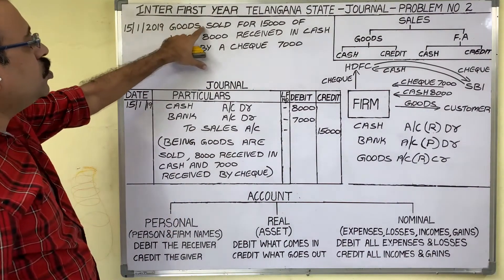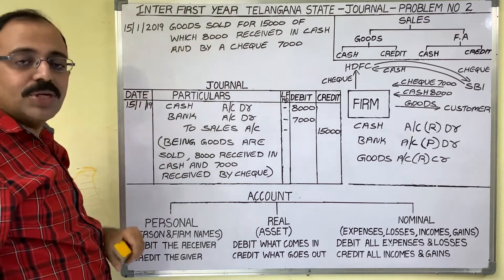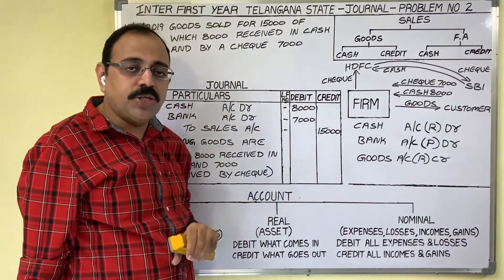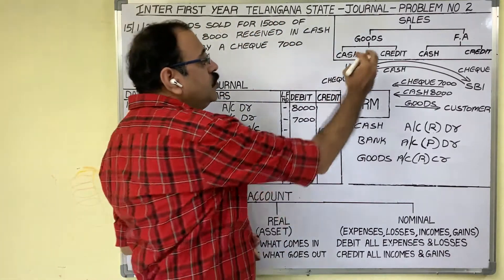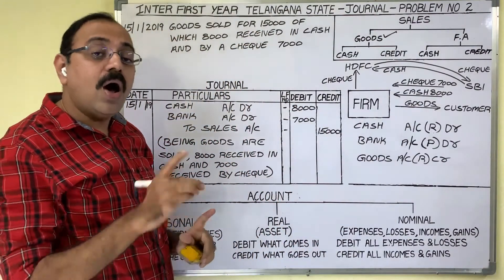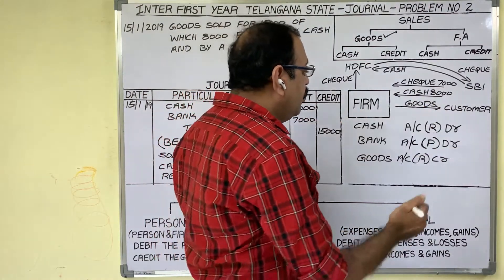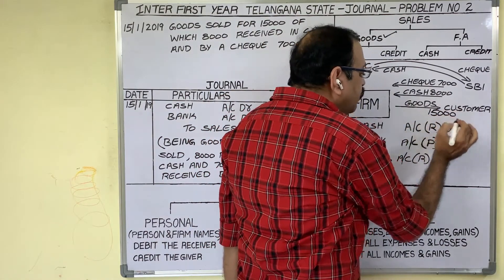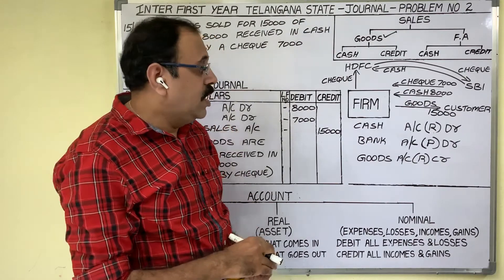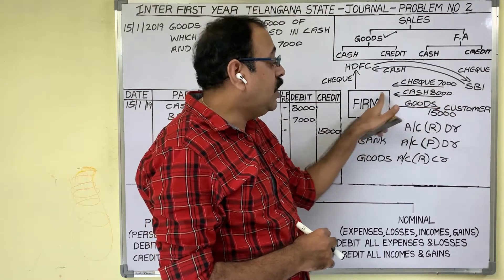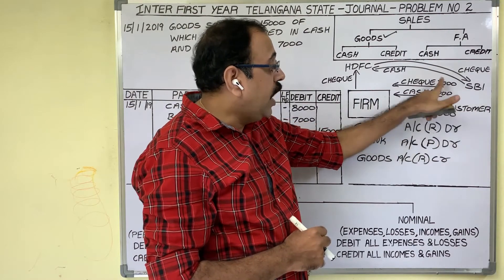The 15th day transaction is: goods sold for 15,000, of which 8,000 received in cash and by a cheque 7,000. When a sales transaction is given, we should observe two points. The firm sold goods to a customer for 15,000 rupees — sales amount is 15,000. The customer has to pay 15,000. Out of this 15,000, the customer paid 8,000 rupees in the form of cash, and for the remaining amount 7,000 rupees, the customer issued a cheque to us.